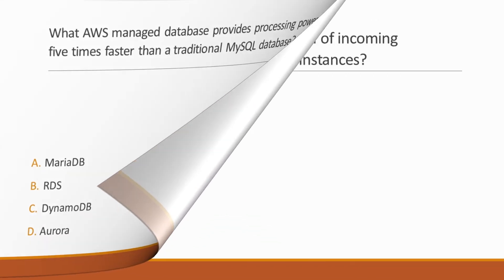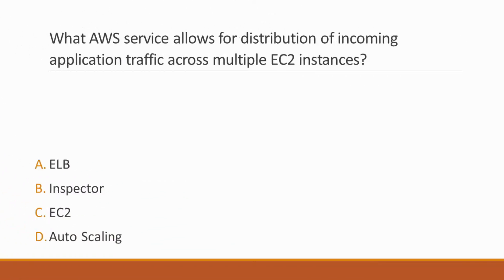Next question: What AWS service allows for distribution of incoming application traffic across multiple EC2 instances? Options: A. ELB, B. Inspector, C. EC2, D. Auto Scaling. Correct answer is option A, ELB, because ELB distributes incoming traffic across multiple EC2 instances and multiple availability zones.